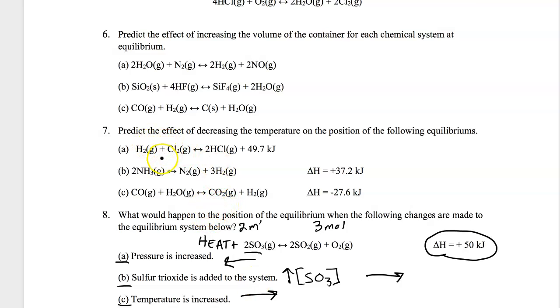Let's look at number 7. Predict the effect of decreasing temperature on the position of each. For A, heat is a product. It's exothermic. So if we lower the temperature, the only way we can create more heat and raise that temperature back up is to shift it toward the product. So the equilibrium will shift to the right in order to adjust.